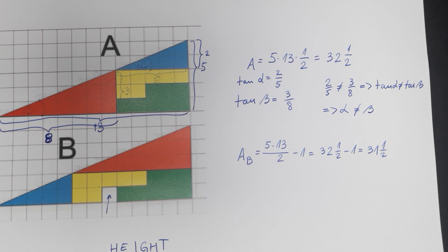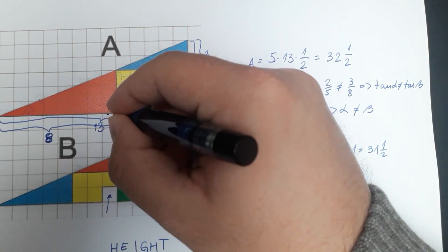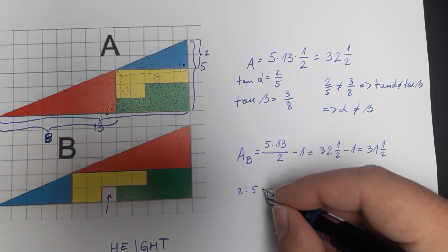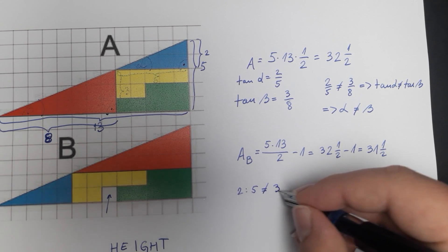An approach from the elementary geometry perspective would be as follows. So the dimensions of the blue triangle are 2 by 5 and the dimensions of the red triangle are 3 by 8. Both of these triangles have a right angle. This is the right angle. We see that 2 by 5 is a different ratio from 3 by 8.